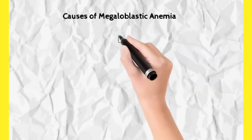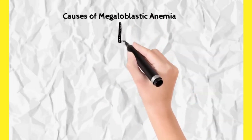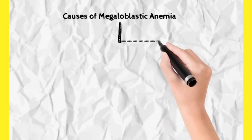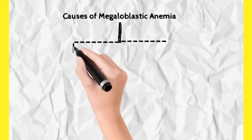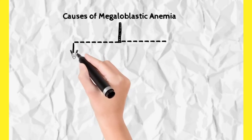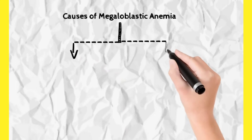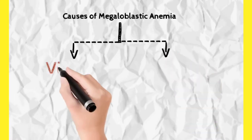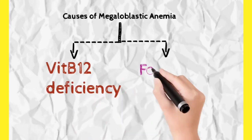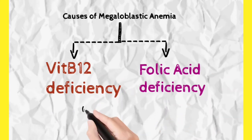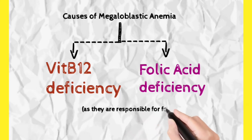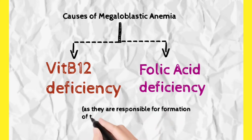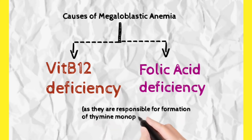Now let us see the causes of megaloblastic anemia. As it is deficiency anemia, it is caused due to deficiency of vitamin B12 or folic acid — both cause megaloblastic anemia. Both are responsible for synthesis of DNA, and specifically thymine monophosphate, which is an important nucleotide of DNA.